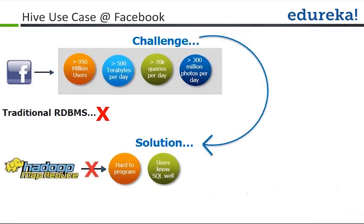The traditional RDBMS was not suitable for storing and processing such huge volumes of this kind of data. The solution they found to handle this kind of dataset was the Hadoop MapReduce job. By having Hadoop for storage and MapReduce for processing, they were able to process the huge dataset coming from their web logs.